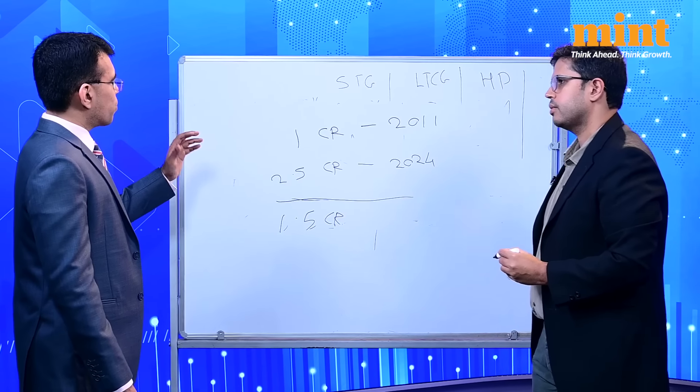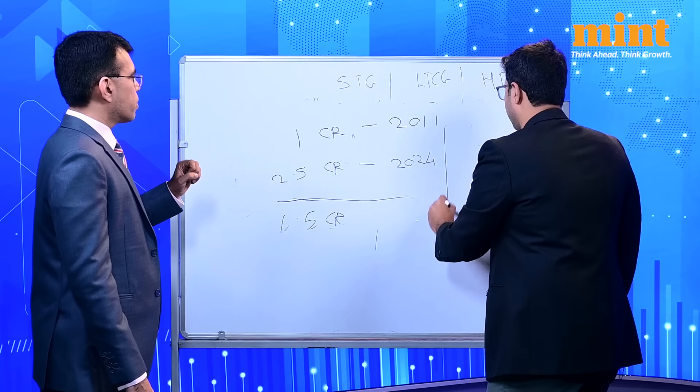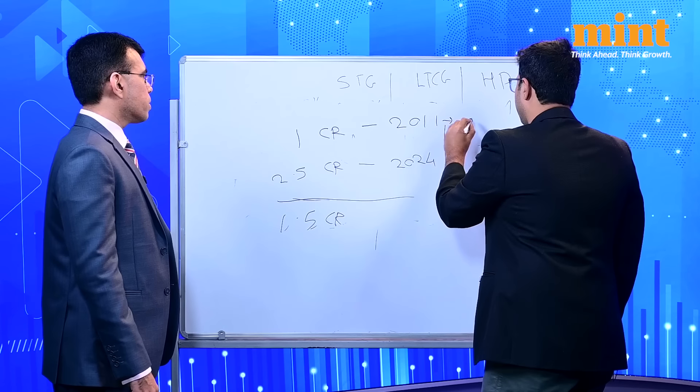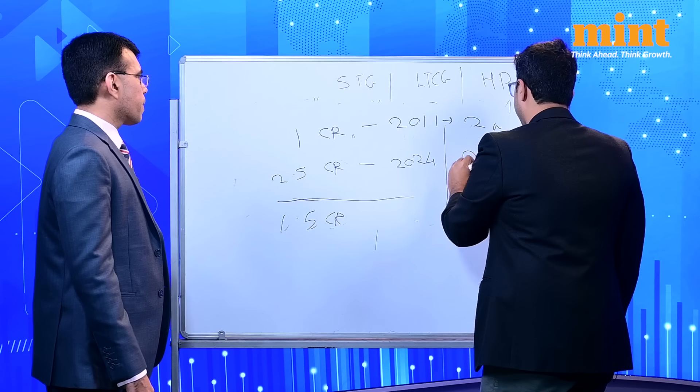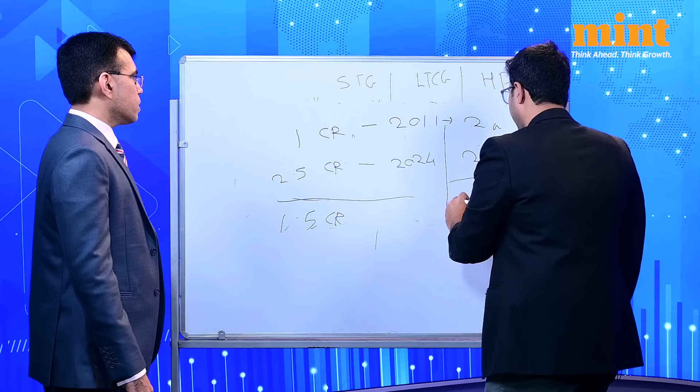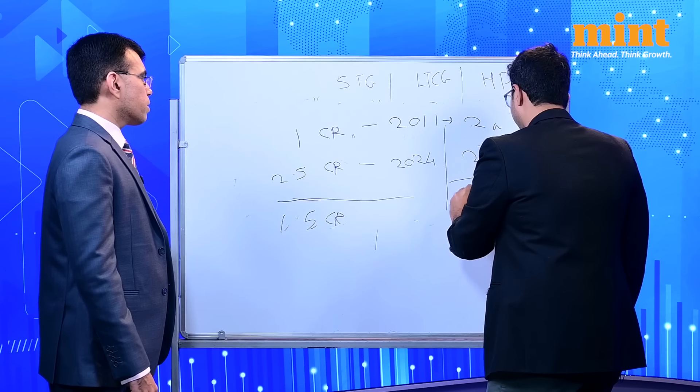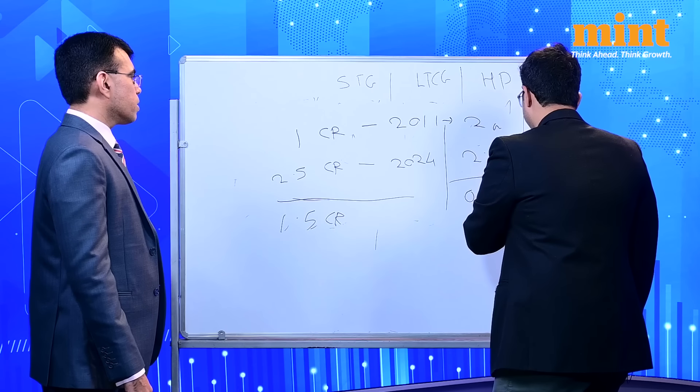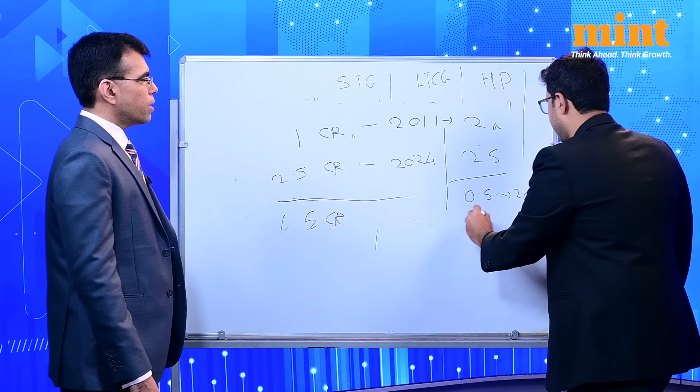So this would be around 2 crores. So this one becomes 2 crores. And sold at 2.5. So it would have been 50 lakhs and 20% of that which is 10 lakhs. That would have been my tax.